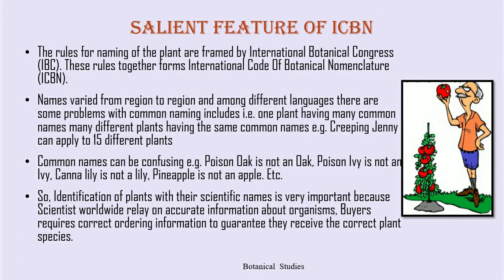Let us discuss the salient features of ICBN. The rules for naming of plants are framed by International Botanical Congress, i.e., IBC. These rules together form the International Code of Botanical Nomenclature. Names vary from region to region and among different languages. Problems with common naming include one plant having many common names, or many different plants having the same common name. For example, 'Creeping Jane' can apply to 15 different plants.